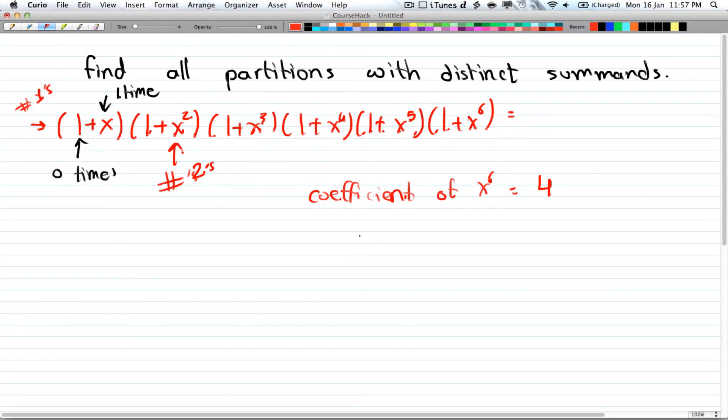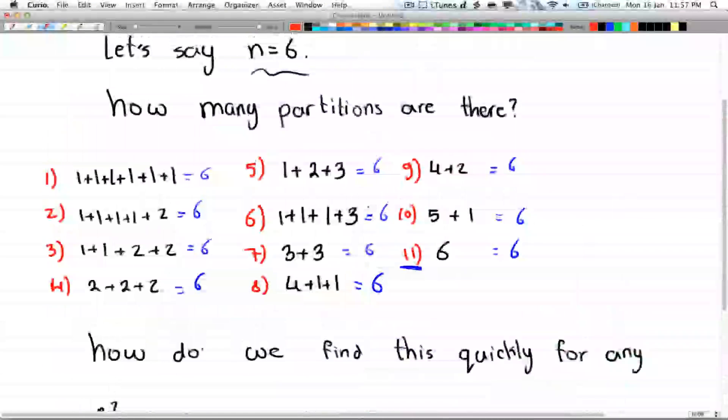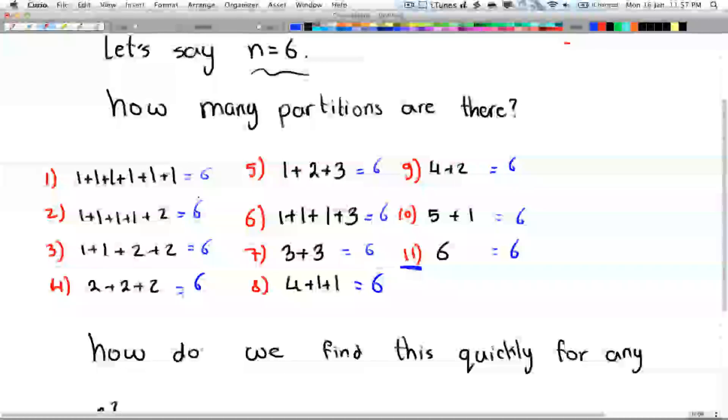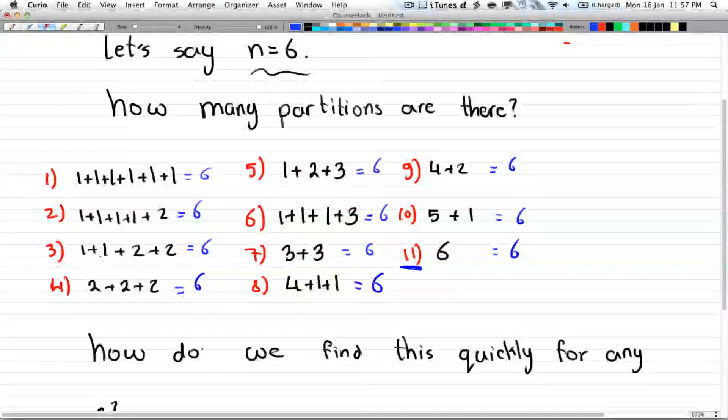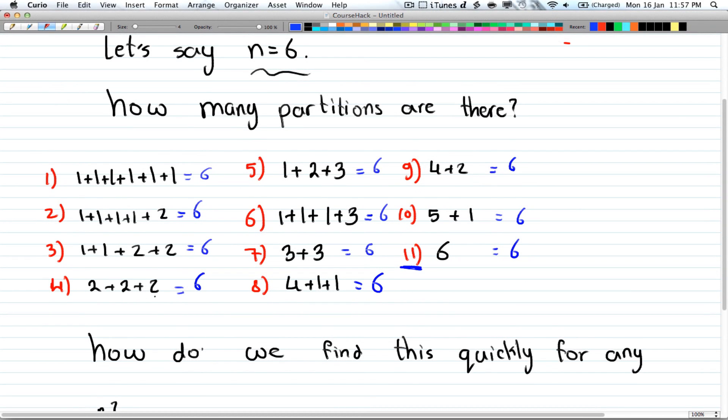And if we go up, alright, let's count how many ways, or how many partitions we can find that have distinct summands. So here you have multiple 1s, you have multiple 1s, multiple 1s, all 2s. Here you have, that's 1, 1 case right here. And then you have 4 and 2, that's another case. 5 and 1, and 6. And these are the 4 cases where you have distinct summands.